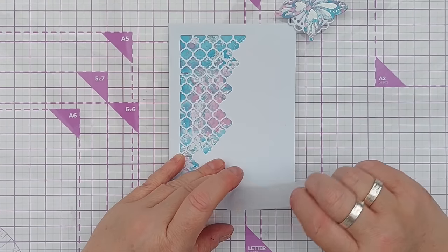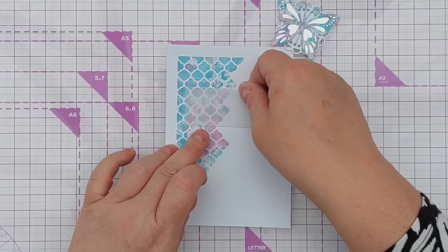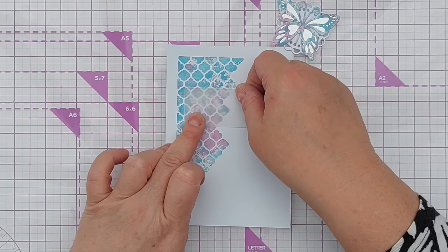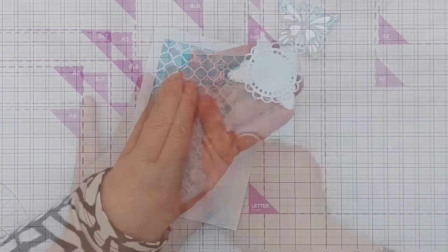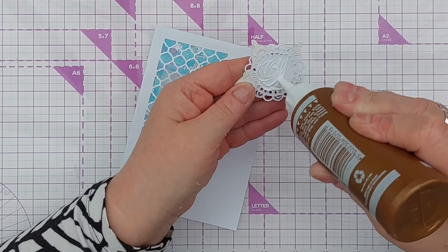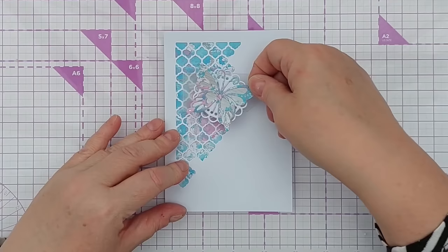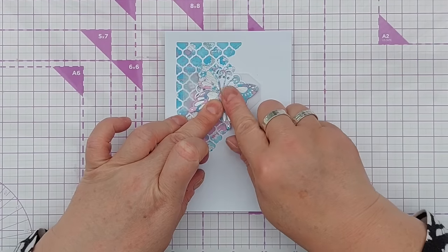Add that there and then add some to the back of my doily, some of this glue, and stick it about there too.